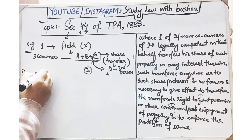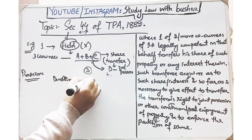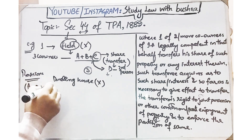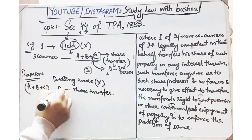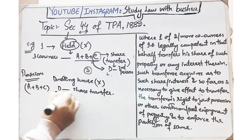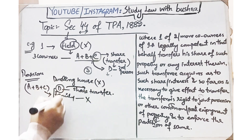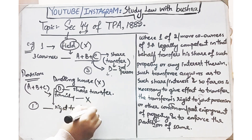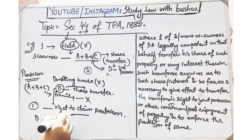But if we change this example to apply the proviso — instead of a field, let's say X is a dwelling house. The same three co-owners A, B, and C exist. C wants to transfer his share to D. Here, C is a co-partner but is not a member of that undivided family. In this situation, D — who receives the transferred share — will get only one right as per the proviso of this section: the right to claim partition only. The other rights of enjoyment and joint possession will not be available to D.